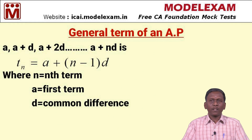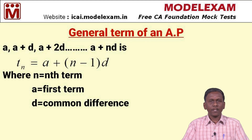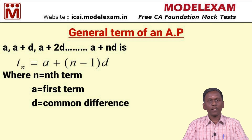The general term of an AP is: a, a+d, a+2d, ..., a+nd. The nth term of an AP is given by t_n = a + (n−1)×d, where a is the first term and d is the common difference.